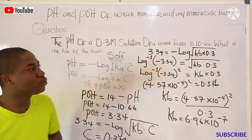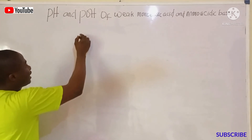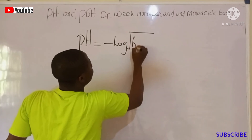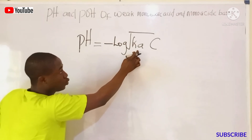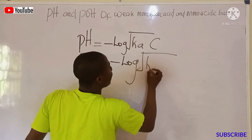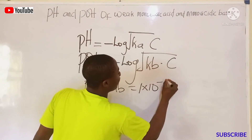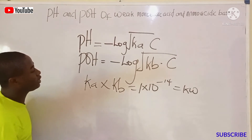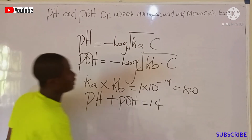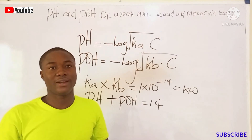To summarize the key formulas for solving pH and pOH of weak solutions: pH of a weak monobasic acid = -log(√(Ka · C)); pOH of a weak monoacidic base = -log(√(Kb · C)); Ka × Kb = 1 × 10⁻¹⁴ (the water dissociation constant Kw); and pH + pOH = 14. These are the important formulas to remember. Do well to subscribe and share this video. Thanks for watching.